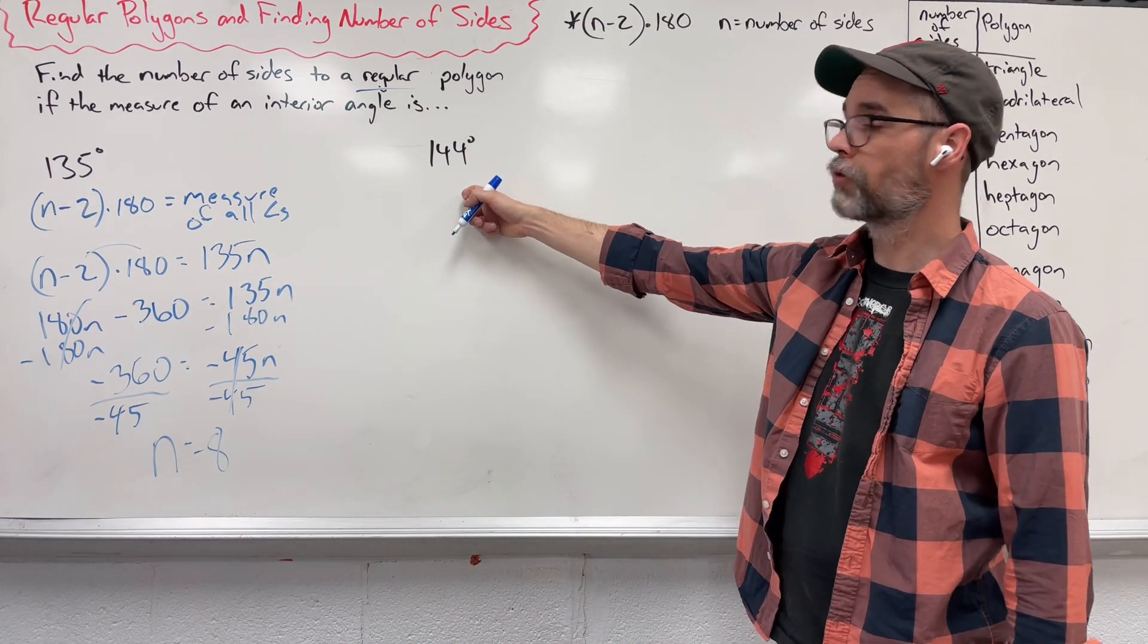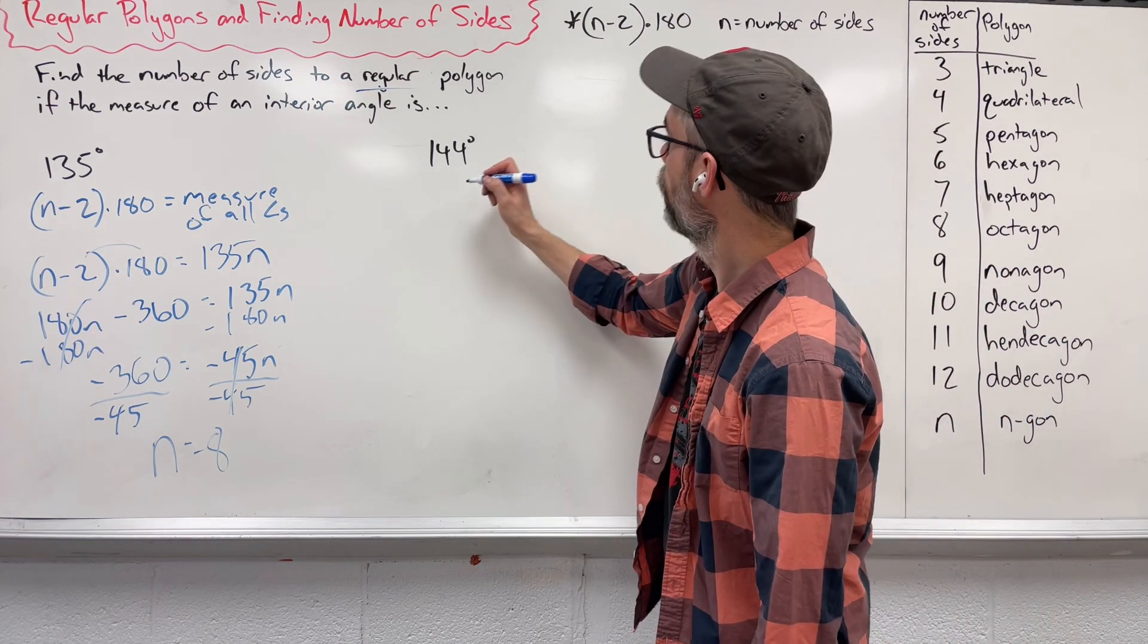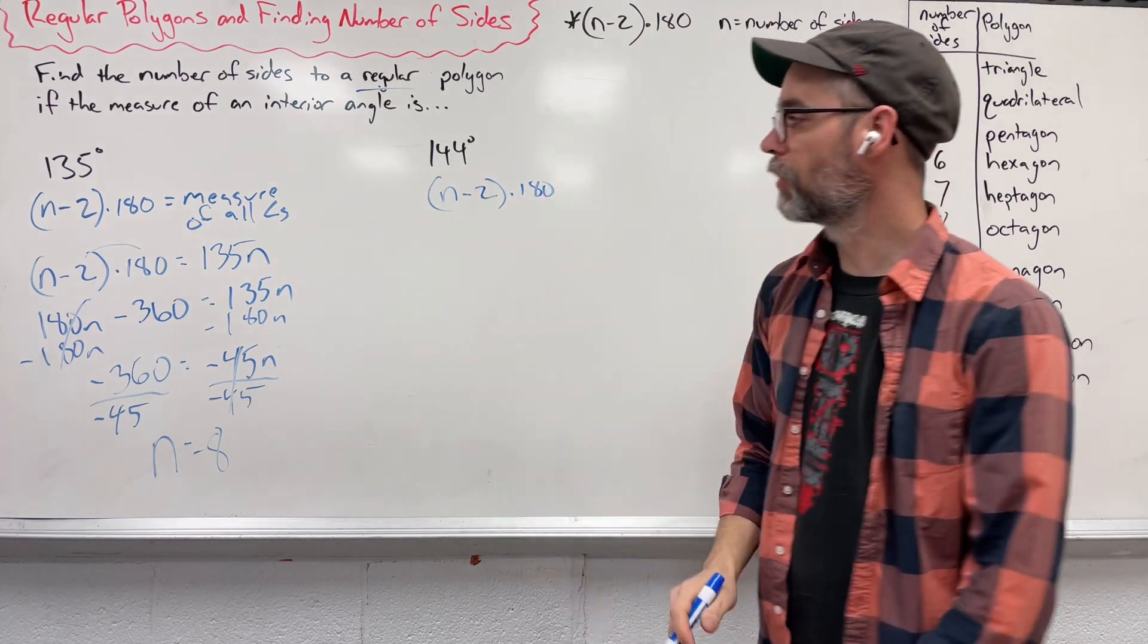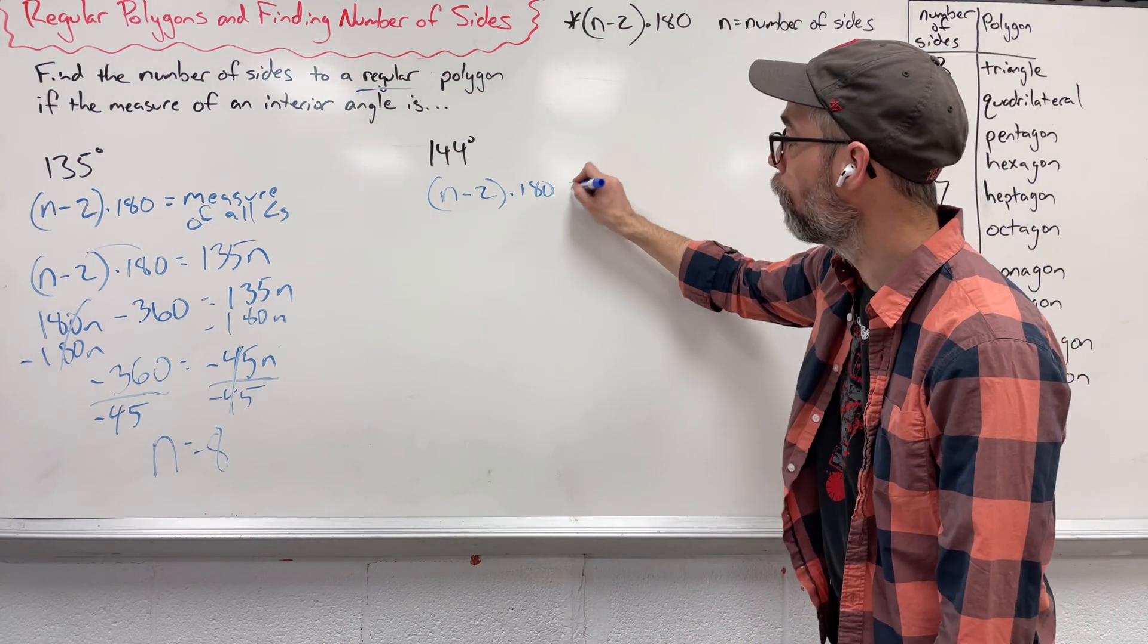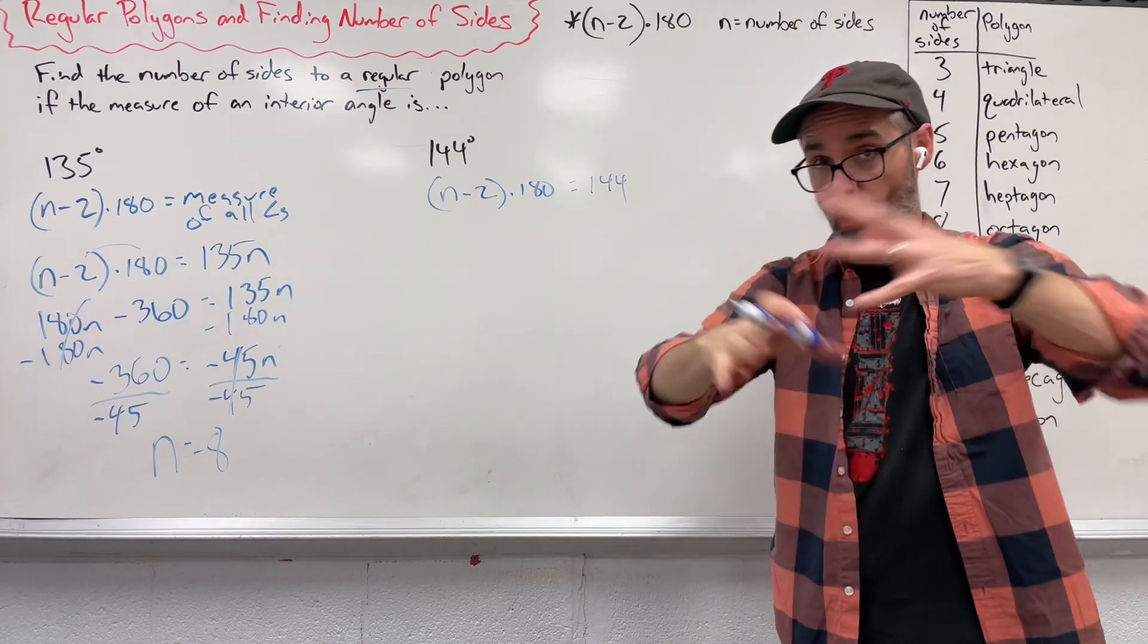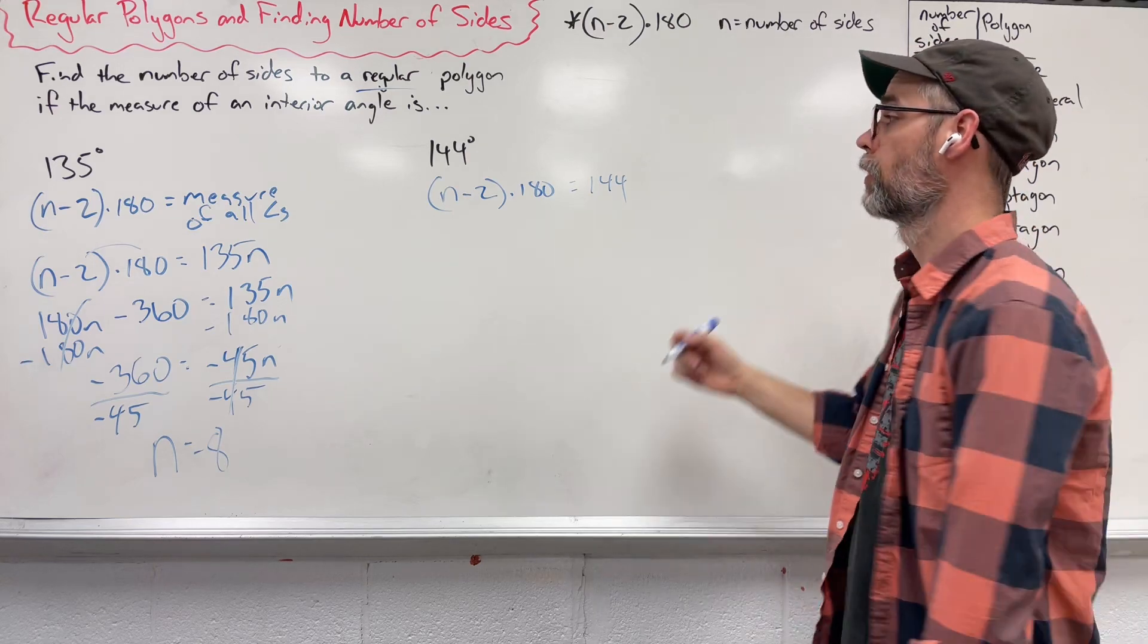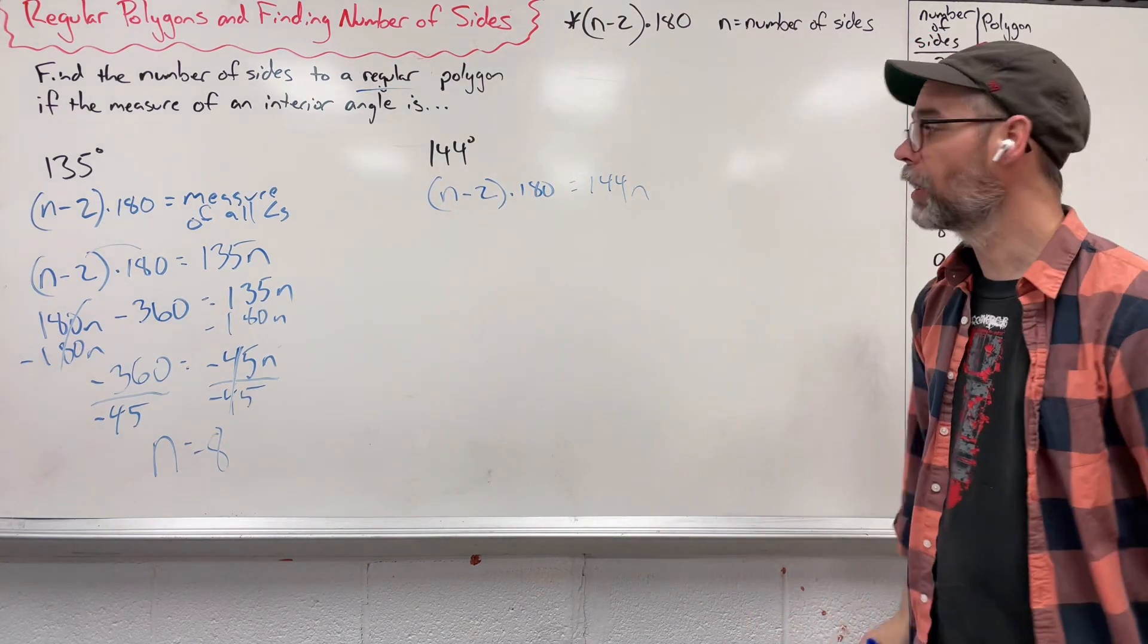What about if we're given a measure of 144 for just one angle? Well, we know that n minus 2 times 180 gives us the measure of all the angles. I don't know what all the angles are. I know what one of them is. I want to take this one and measure it by all of them. n stands for the number of sides or really the number of angles. This n and this n have to be the exact same thing. So let's distribute and let's solve.